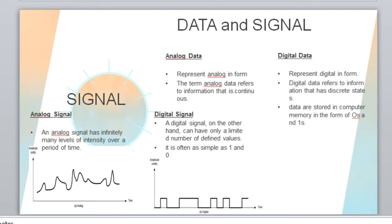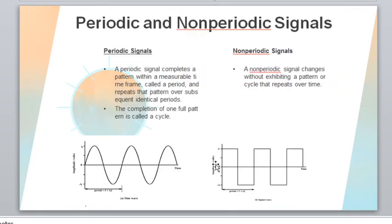For transmission and communication we normally use signals, which can be analog signals or digital signals. An analog signal has infinitely many levels of intensity over a period of time — there are infinite levels of signal. In a digital signal there are only definite, defined values — for example, 1 and 0.